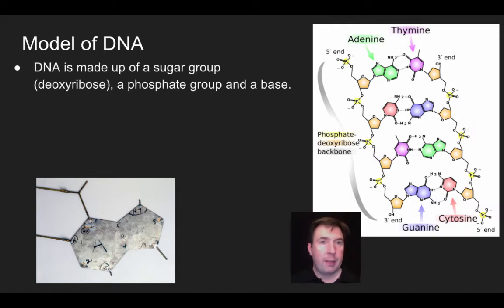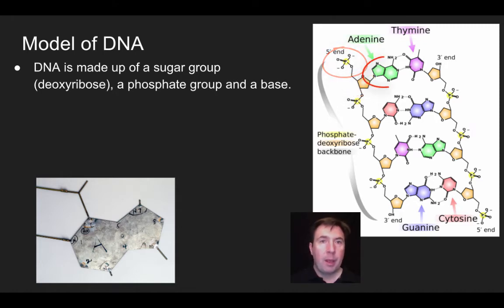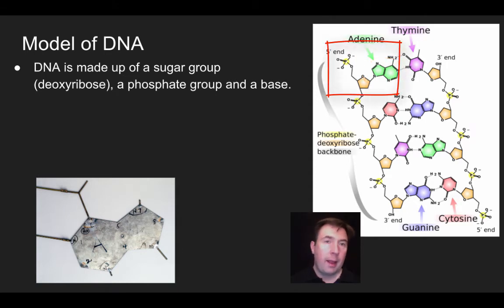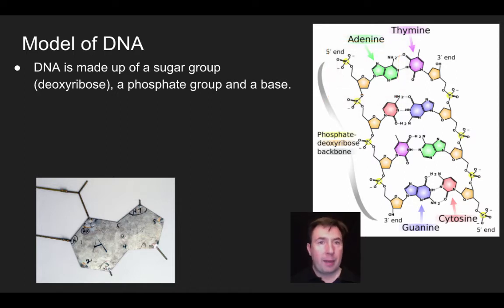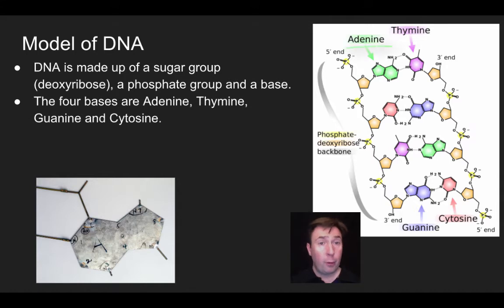So what is DNA made of? It's made up of a sugar, which is deoxyribose, a phosphate group, and a base. Those three components together are used to form a nucleotide. Watson and Crick got a whole bunch of nucleotides cut out of aluminum. When they pieced it together, they were able to create a model that showed the four different bases and how those bases could possibly go together. The four bases are adenine, thymine, guanine, and cytosine.